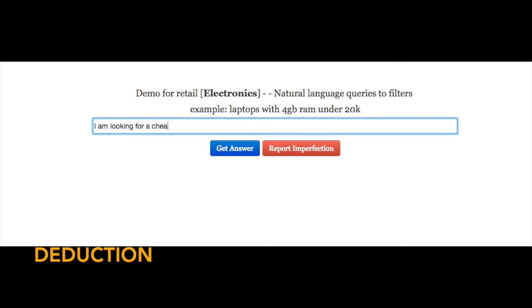This is a demo of that needles natural language to filters capability. I'm typing in I'm looking for a cheap frost free. It correctly deduces that the item is a refrigerator although it was not mentioned in the query, and that we are probably looking for deals when it says hint deal, that we are looking for deals on refrigerators that are frost free.